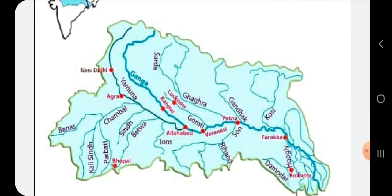The Yamuna is another important river of the basin. It also has its source in a Himalayan glacier called Yamunotri. The land between the Ganga and the Yamuna is called the Doab. Many important and holy cities are located in this part of the plains, among them Delhi, Agra, Kanpur, Lucknow, Patna, Kolkata, Allahabad, Varanasi, etc.